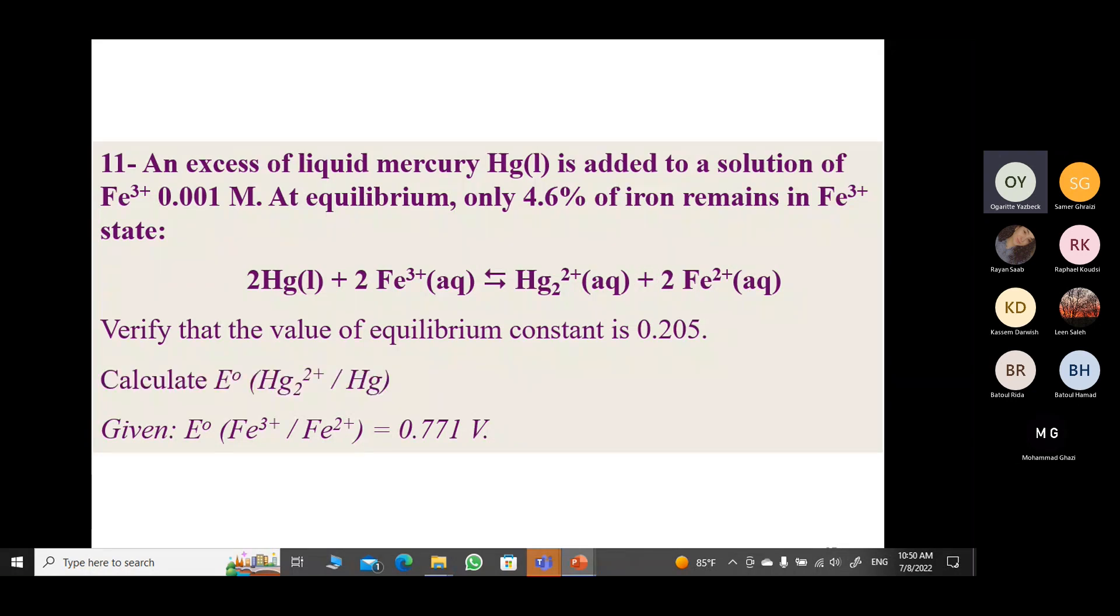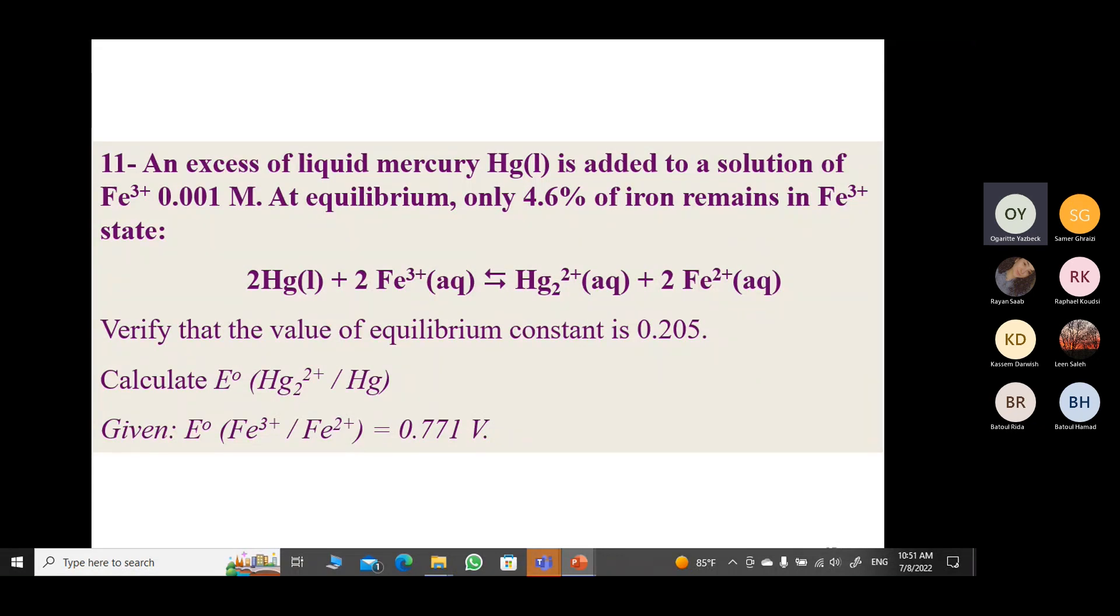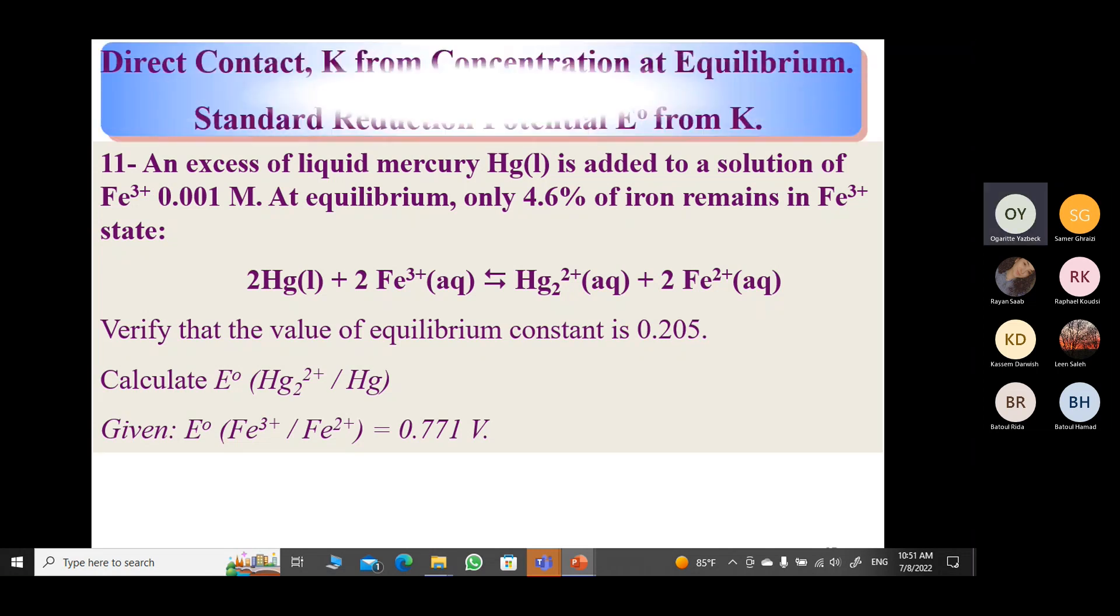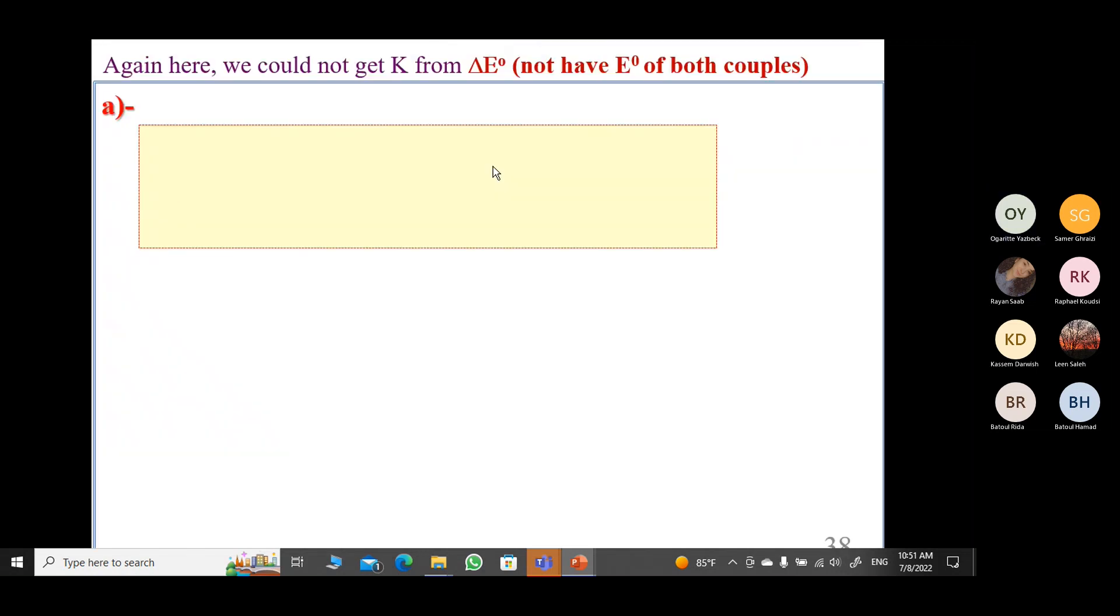Verify that the equilibrium constant is 0.205. Yani, they're giving you the K and they're asking you to verify it. Make sure that it's correct. And calculate the E° of Hg. So again, it's a direct mixture. They're not in separate containers. K is from the concentration at equilibrium. K is not going to come from the E°. Why? Because I don't have the E° of one of the couples.